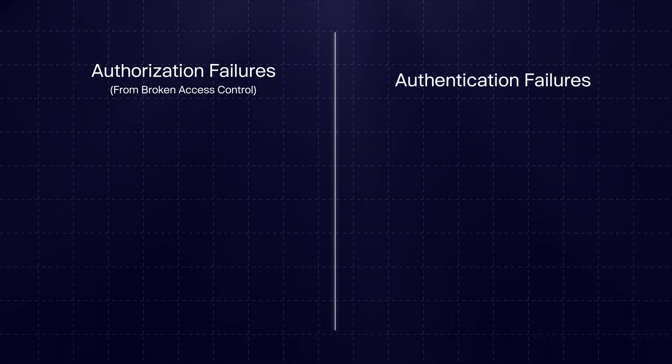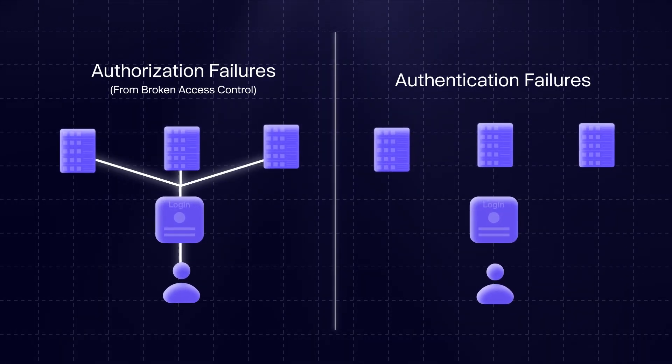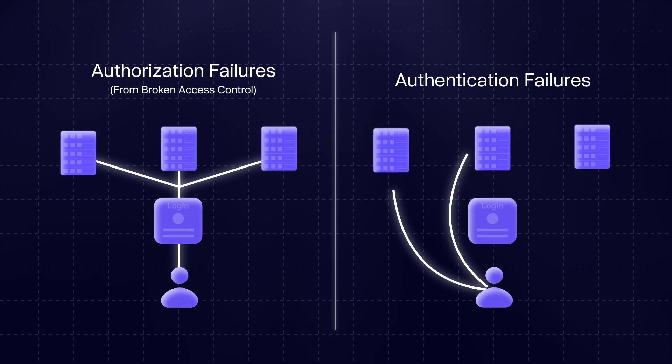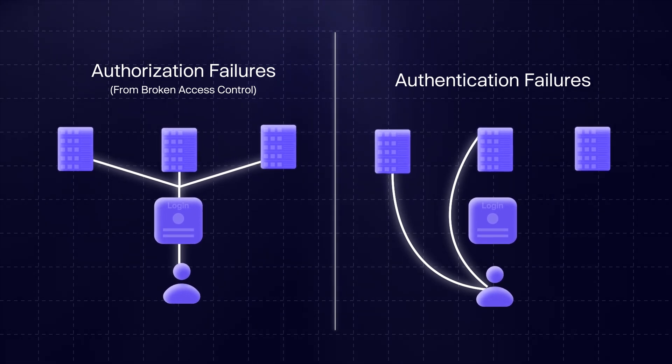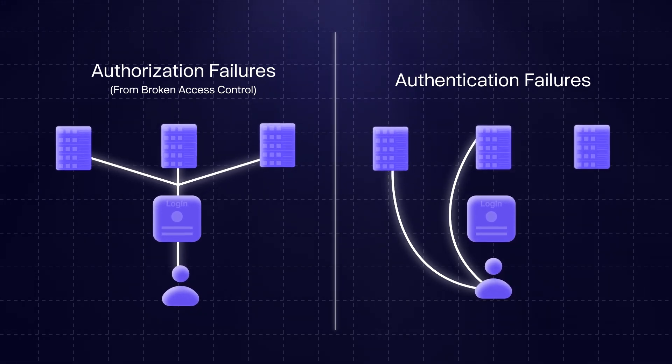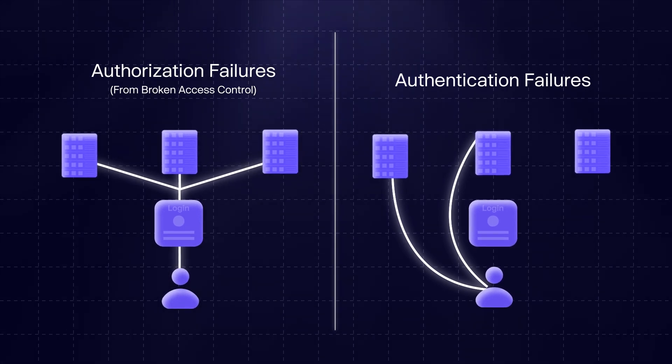A lot of people seem to get confused between identification and authentication failures and another OWASP Top 10 item — broken access control — so I want to quickly explain the differences between the two. Broken access control is all about what you can do once you've logged in — authorization, not authentication. Authorization is basically: I'm logged in, but can I view someone else's data or admin information when I shouldn't? Authentication failures are all about being able to trick an application into thinking you're someone else through the login process.